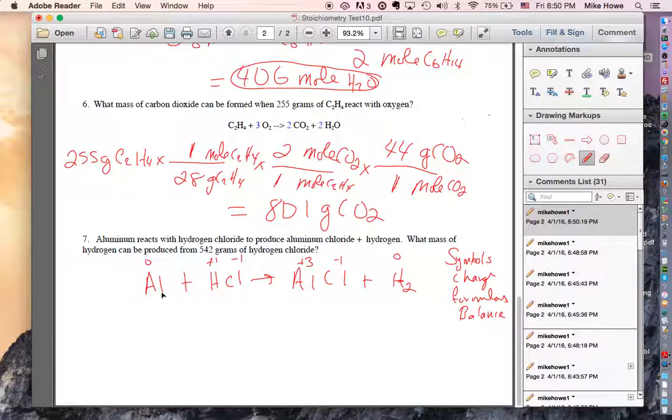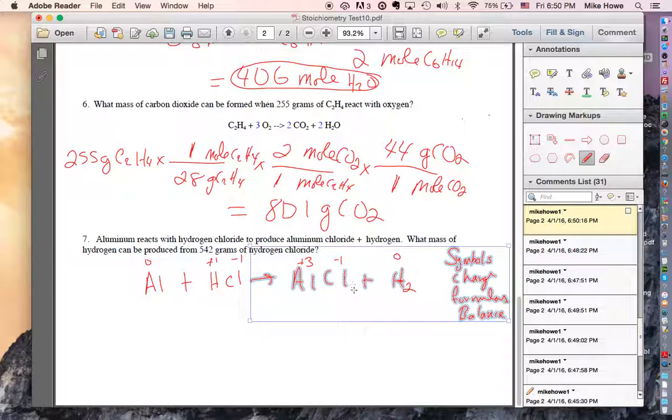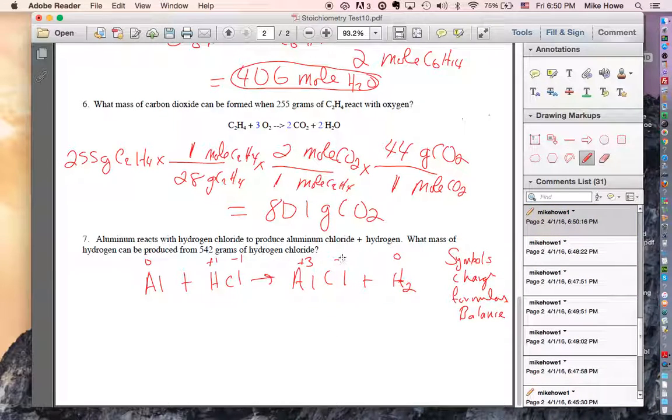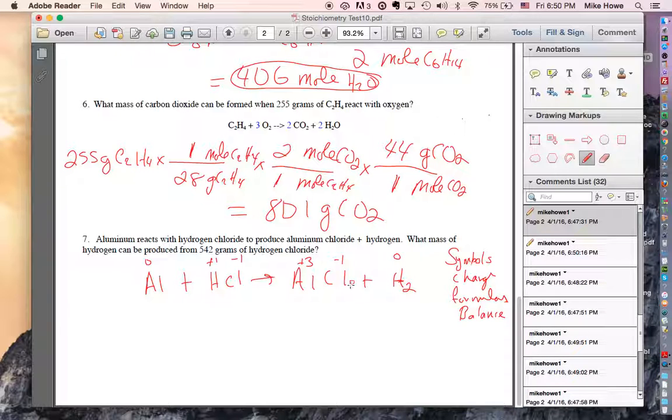This formula is as it stands, it's just by itself. Hydrogen is plus one. Chlorine is minus one. So that formula is okay because the charges are balanced. Aluminum is plus three and chlorine is minus one. So you're going to need to put a three after the chlorine like that.